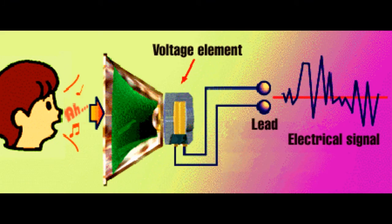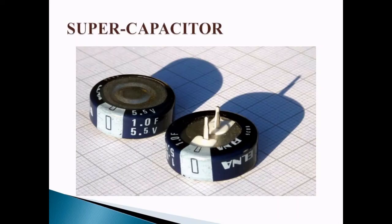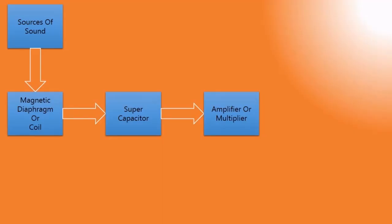This stored electrical energy in the super capacitor acts as an input source to the amplifier circuit. The function of this amplifier is to amplify the voltage level and current level.